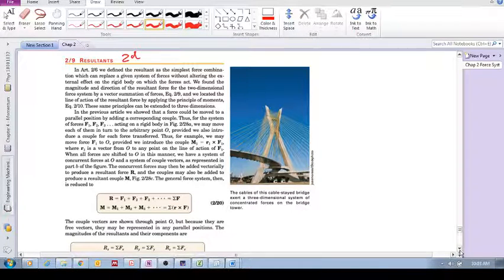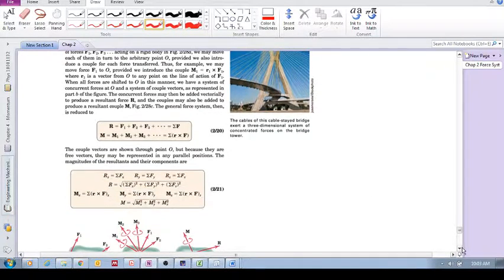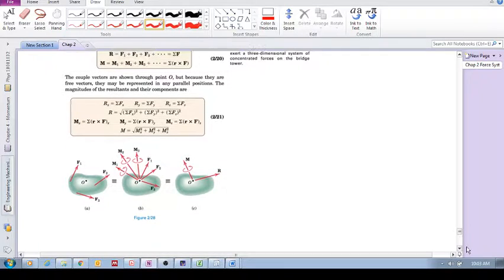We can extend what we've learned to three dimensions. I like pictures. Here again we've got a body with three forces - it can be any number of forces. How do we reduce this to a resultant?